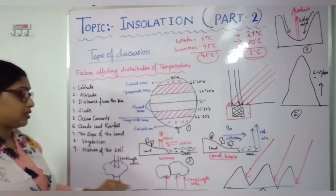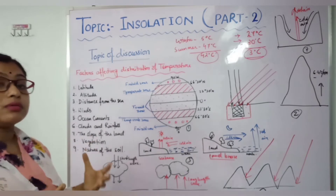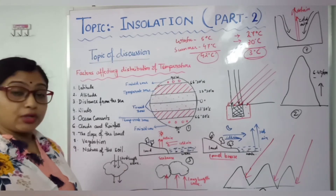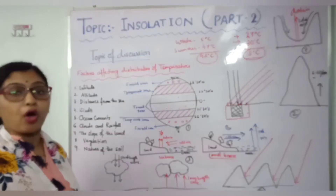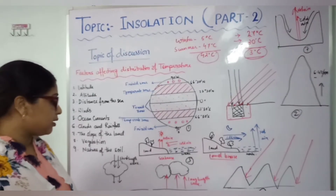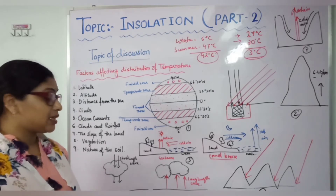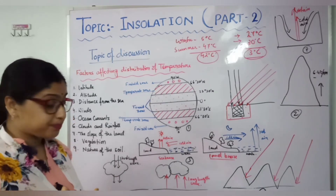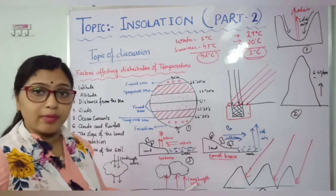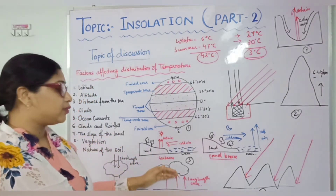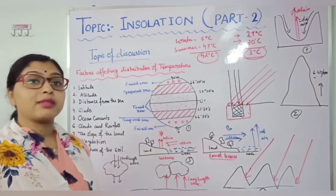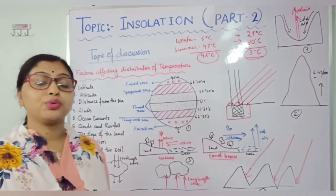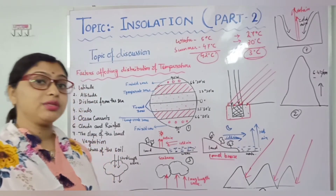Next is clouds and rainfall. In this diagram, you can see solar radiation coming towards the earth as short wavelength radiation, which can easily enter through objects. But after being received by the earth's surface, the terrestrial radiation reflected back from the earth becomes long wavelength radiation. Long wavelength radiation cannot move above the clouds. So on a cloudy day, the temperature can increase because clouds prevent terrestrial radiation from escaping into space.